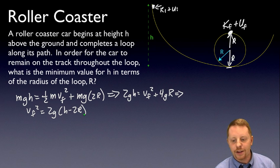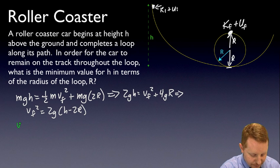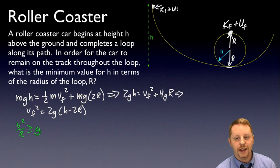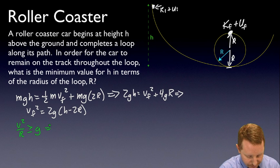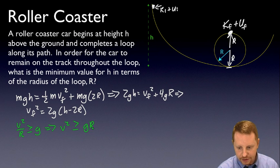Let's take a look now and realize that for an object going around a circle, it must have some centripetal acceleration. v²/r has to be its centripetal acceleration. For it to remain on the tracks, we know that v²/r must be greater than or equal to the acceleration due to gravity. Otherwise, it's not going to remain on the track. Therefore, v² must be greater than or equal to gr.